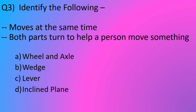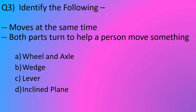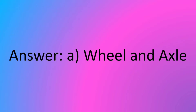Question number 3. Identify the following: moves at the same time; both parts turn to help a person move something. Option A, wheel and axle. Option B, wedge. Option C, lever. Option D, inclined plane. The answer is option A, wheel and axle.